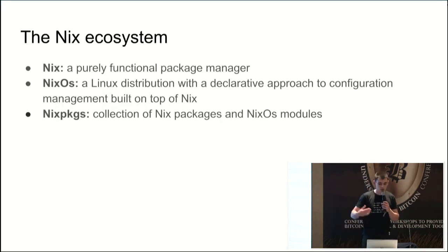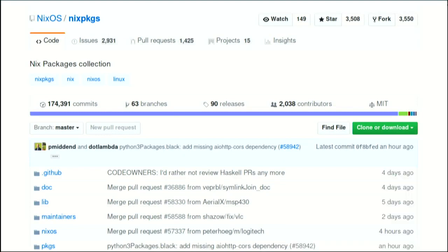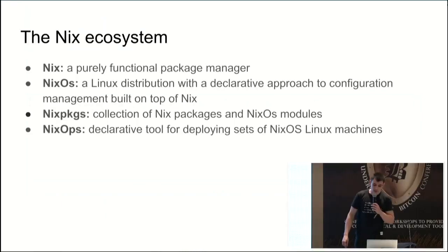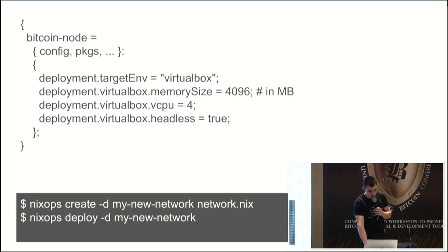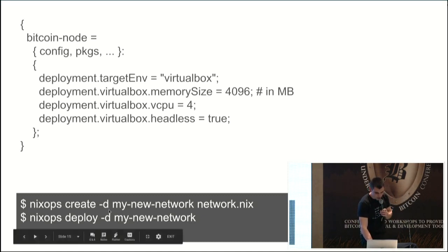The next piece of the puzzle is the collection of Nix packages and NixOS modules — nixpkgs. It's a GitHub project; people create pull requests with new versions of packages, they get merged and then you can easily use them. The Nix package manager can also be installed on most Linux distros. And then there's NixOps, a declarative tool for deploying sets of NixOS Linux machines. You define your Bitcoin node as a function, specify your deployment target such as VirtualBox, set how you want your system to look, then create and deploy the network with the nixops create and deploy commands.